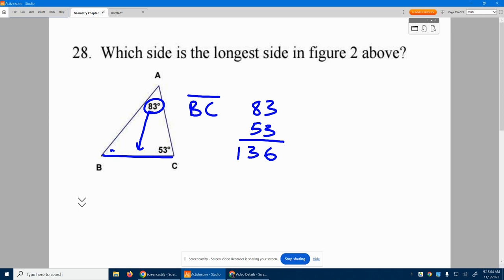136, right? 8 and 5 is 13, 136. We've got to get to 180. So I'm like, hey, there's got to be a 4 and then another 4, 44. That would add up to 180.